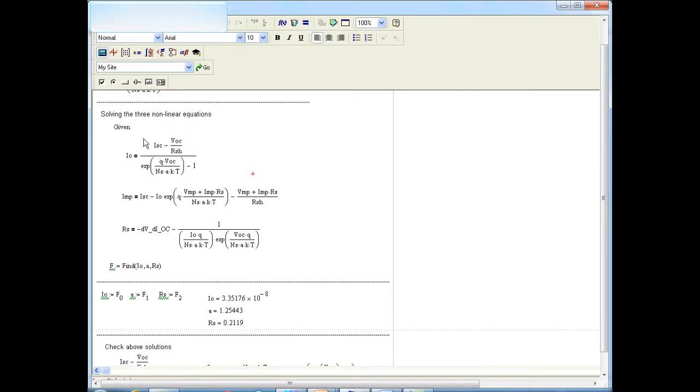So we start with the statement given, then write the three nonlinear equations, and then simply say, find IO, A and RS. So MathCAD solves them. And the resulting values that makes the values match each of these three equations as close as possible are shown here: 33 nano amperes, A of 1.254 and RS of 0.2119. The values that we saw in the PowerPoint.